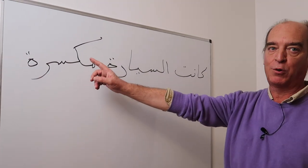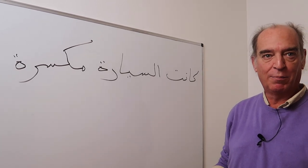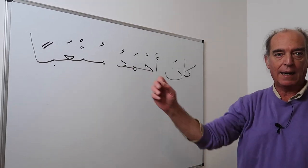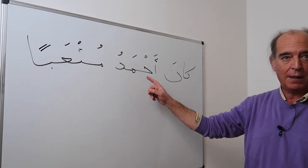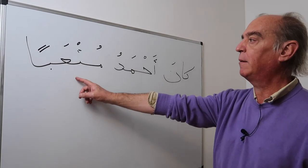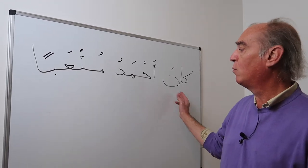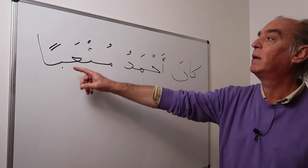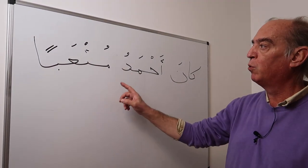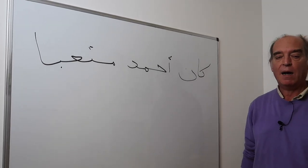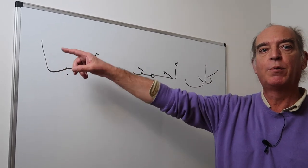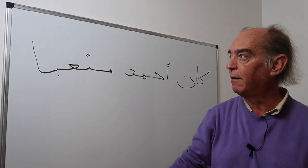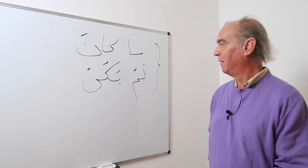Kana ad-darsu muqassara-tan: the car was completely destroyed. Muqassara is stronger than maksor. Kassara is to break; kassara is to destroy. Another example: kana ahmadu mutaaban. Ahmad is the proper name and is the ism kana. Mutaab means tired, so Ahmad was tired. As khabar kana, the adjective mutaab has to be in the accusative: kana ahmadu mutaaban. You can also say kan ahmadu mutaaban, in which case you have to pronounce the accusative -an, which is helped by seeing the alif.